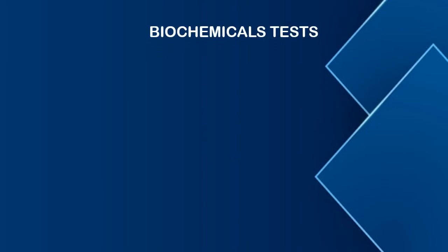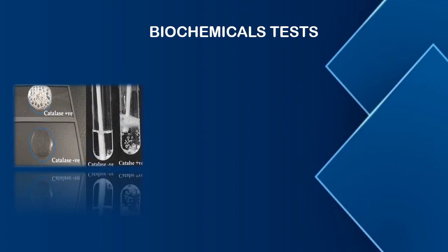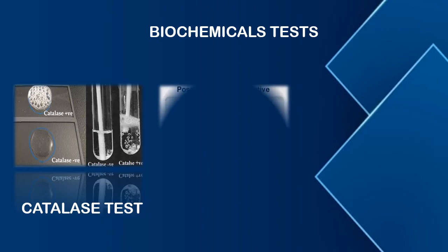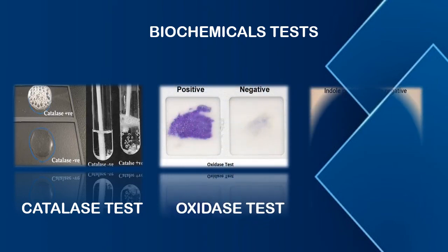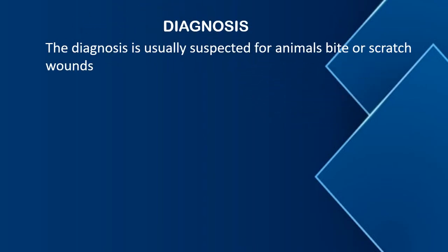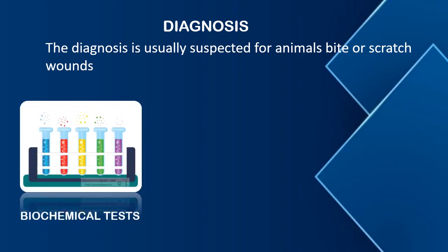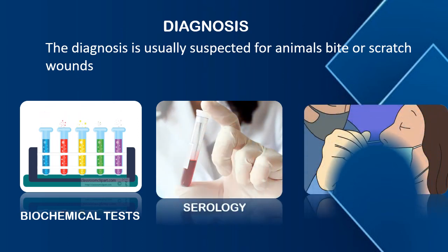Furthermore, there are biochemical tests through which we can identify it. The first is the catalase test, which is positive — bubbles appear. The second is the oxidase test, which shows a blue color. The third is the indole test, which is also positive. Next is diagnosis, through which we can confirm the presence or identification of this disease. The diagnosis is usually suspected from animal bite or scratch wounds. We can also perform biochemical tests, serology, and PCR.